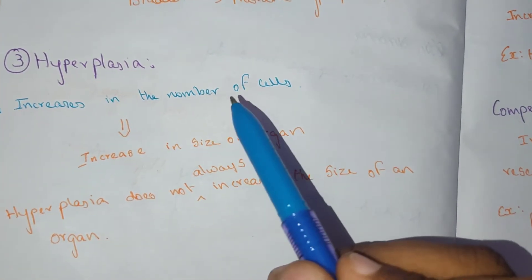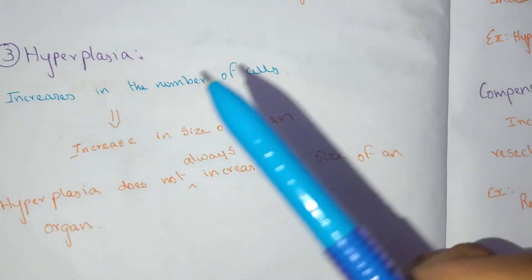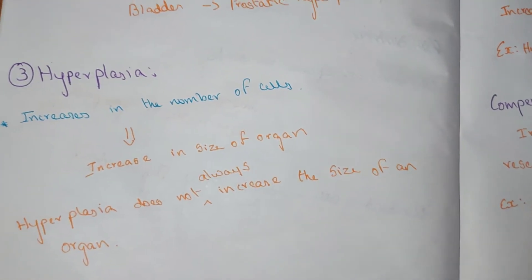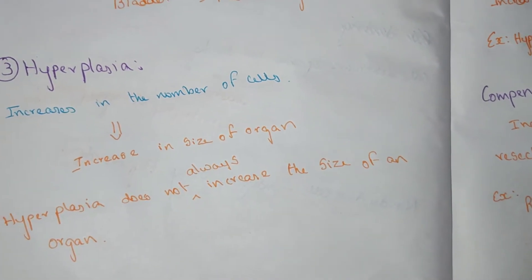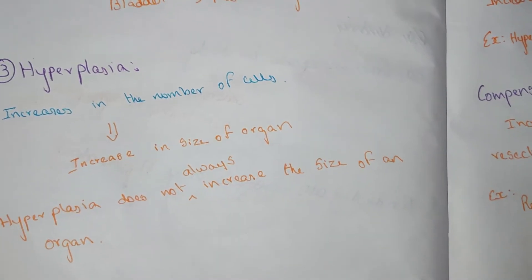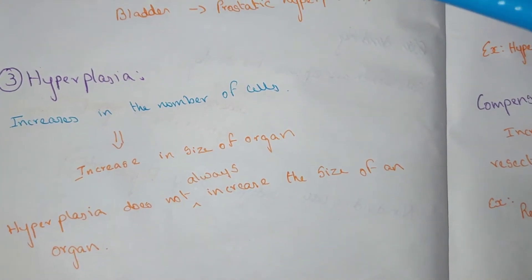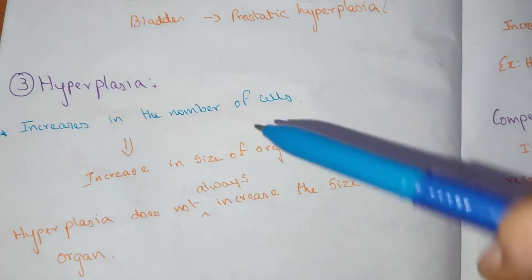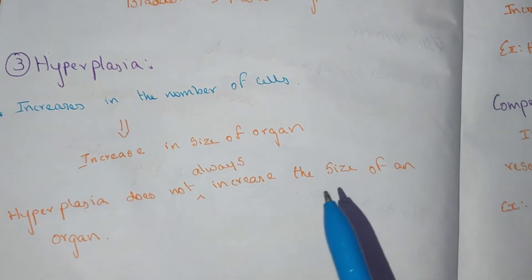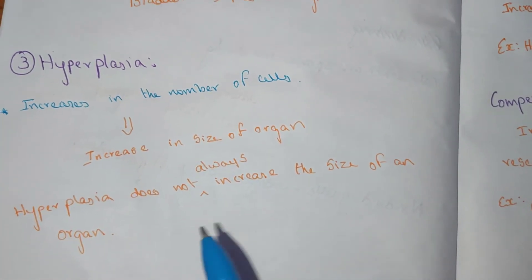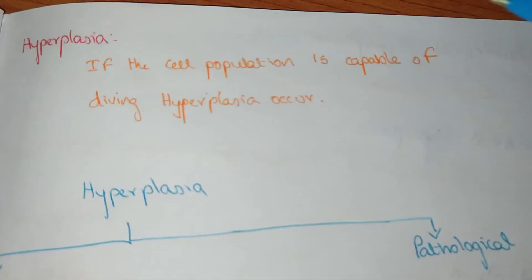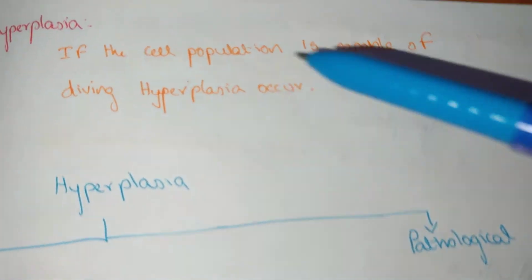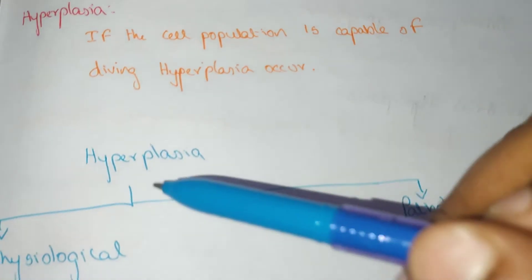Hyperplasia is an increase in the number of cells, which increases the size of the organ. Hyperplasia does not always increase the size of the organ. It occurs in cell populations that are capable of dividing.